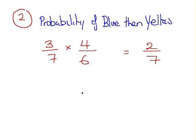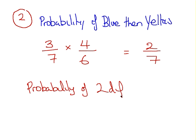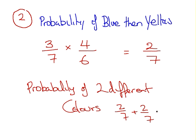The overall probability of two different colours is two over seven plus two over seven, and that's equal to four over seven.